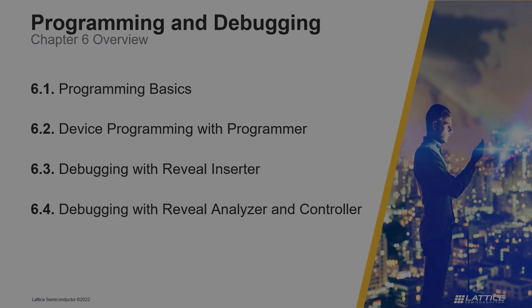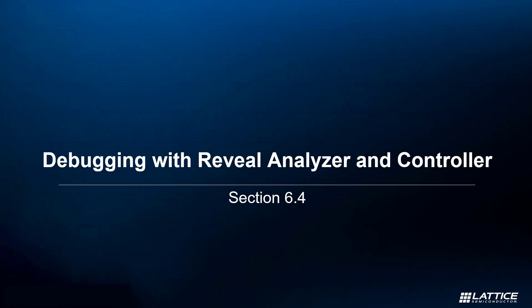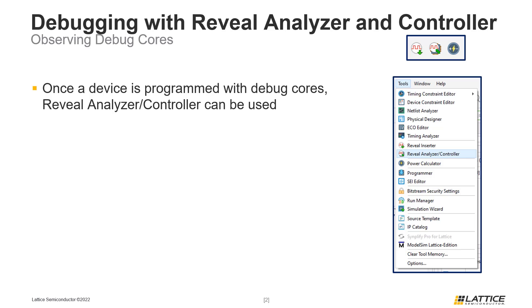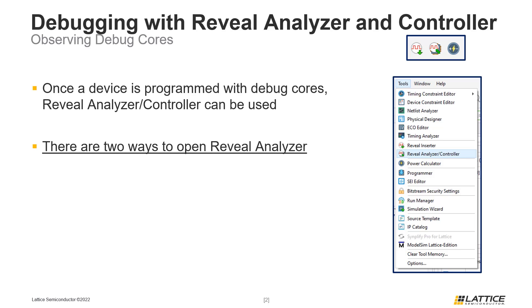Chapter 6, Section 4: Debugging with Reveal Analyzer and Controller. In this section of the video series, we will be discussing the basics for debugging a design using Radiant's Reveal Analyzer and Controller. After debug cores have been added to a project, the process flow will have to be run again. Once a device has been programmed with the updated bitstream with debug cores, Reveal Analyzer can be used. There are two ways Reveal Analyzer can be launched.